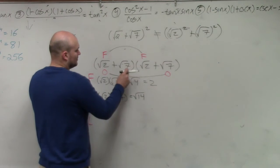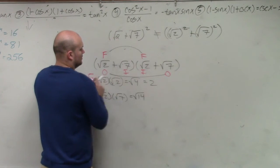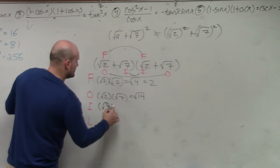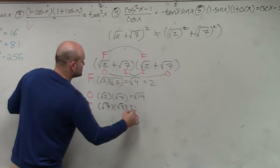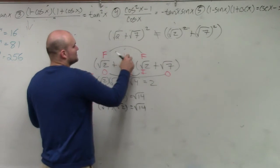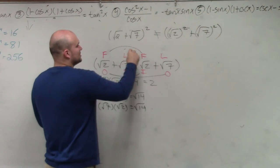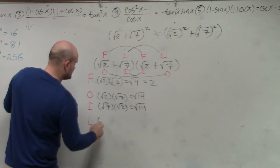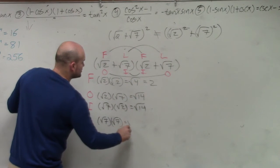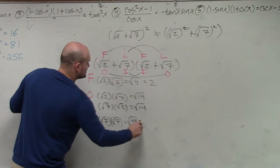Then we do the inner, which is those two. Now I do the square root of 7 times the square root of 2, which is the square root of 14, same as the last one. Then the last ones we do is the last, which are the last two terms in each binomial, which is the square root of 7 times the square root of 7, which equals the square root of 49, which is equal to 7.